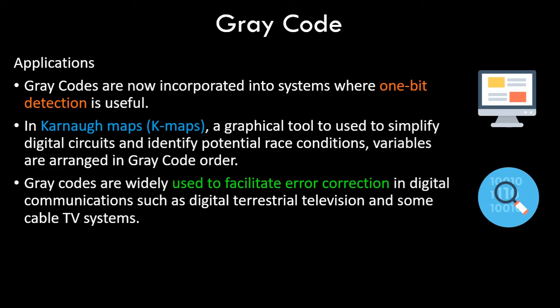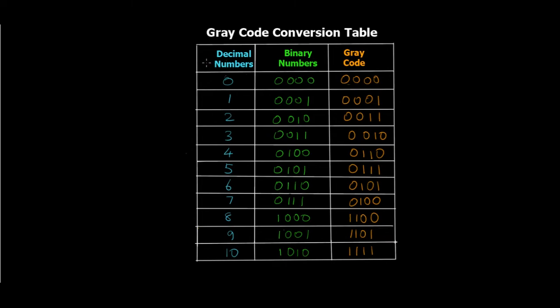Gray codes are also widely used to facilitate error correction and detection in digital communications, such as digital terrestrial televisions and some cable TV systems. That was a brief overview of gray code theory, its applications, when it was founded, and what it is. Now let's see a practical example on the digital blackboard. I have the gray code conversion table for decimal 0 to 10 on screen.